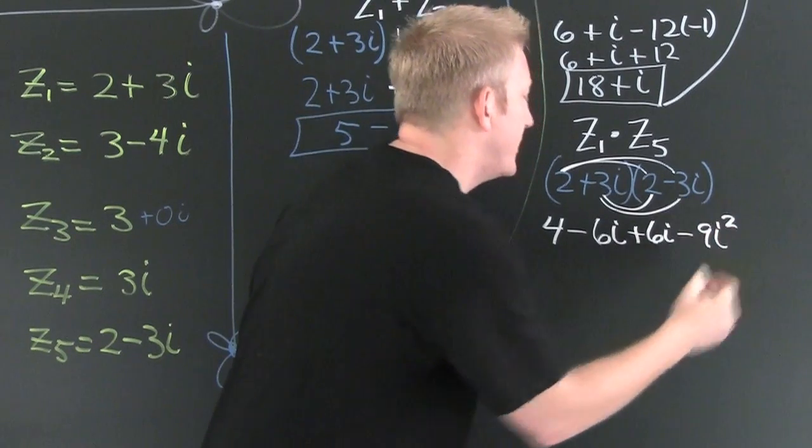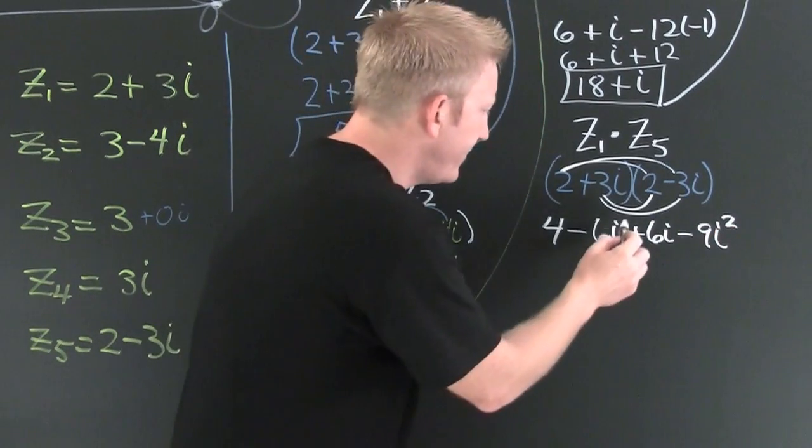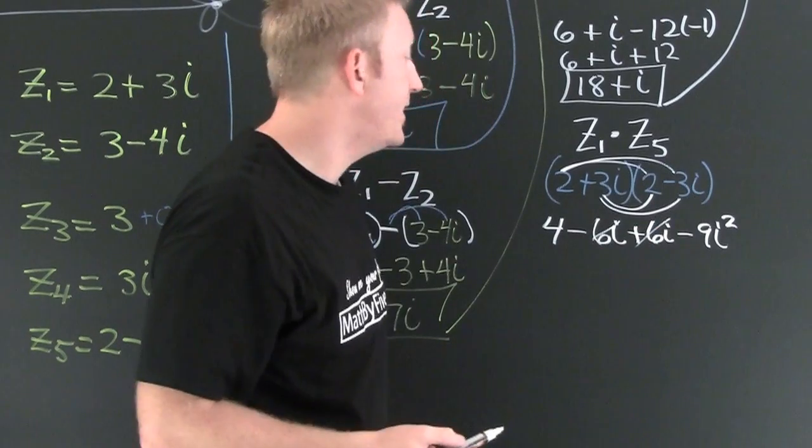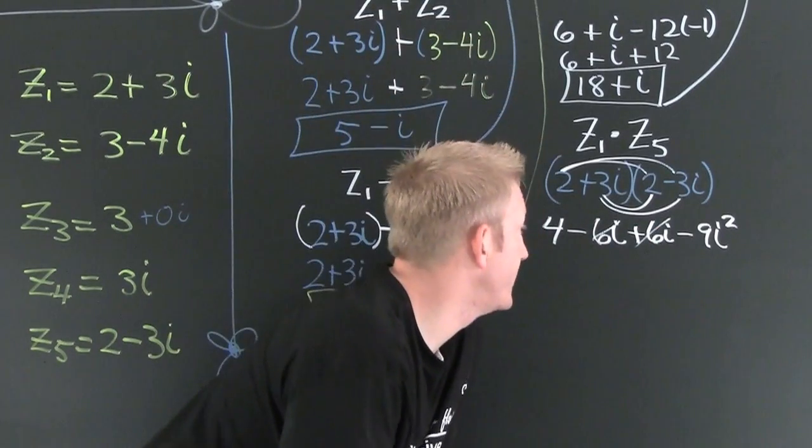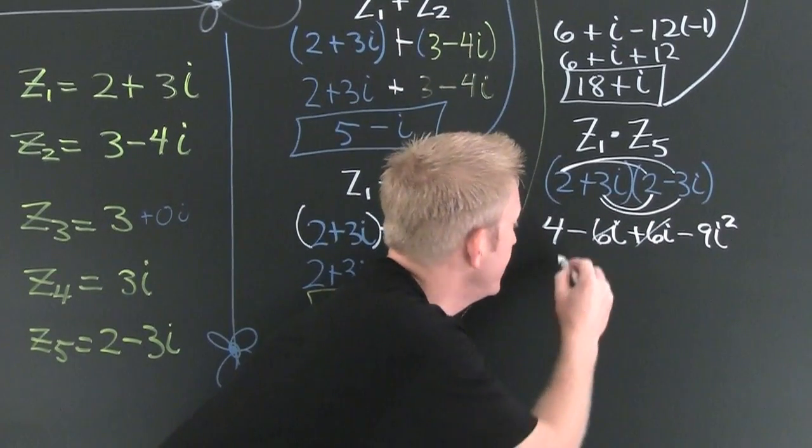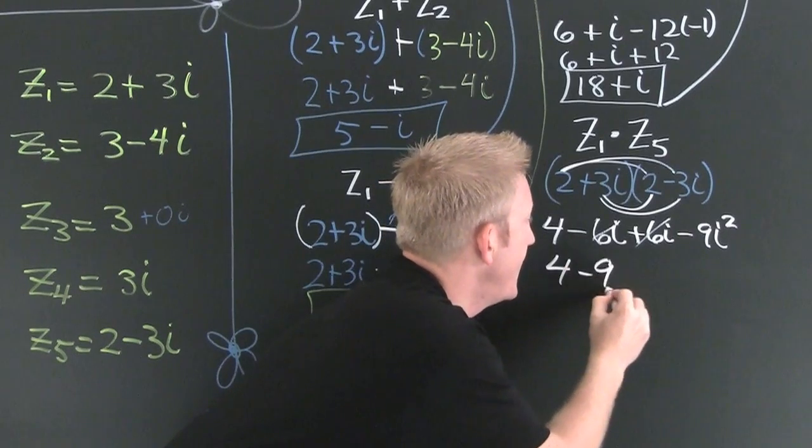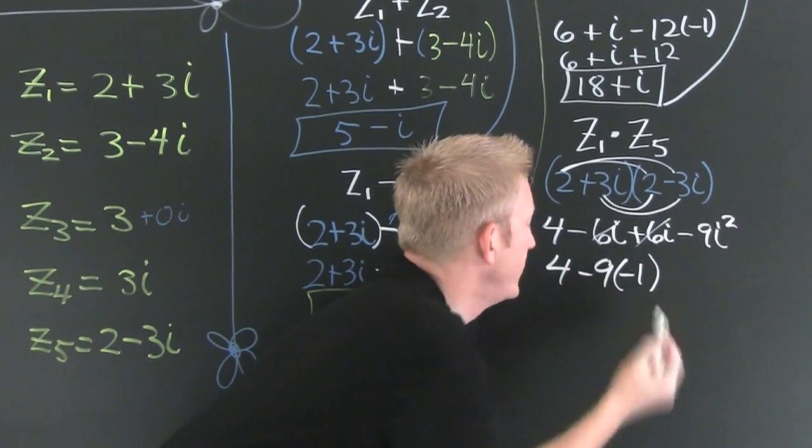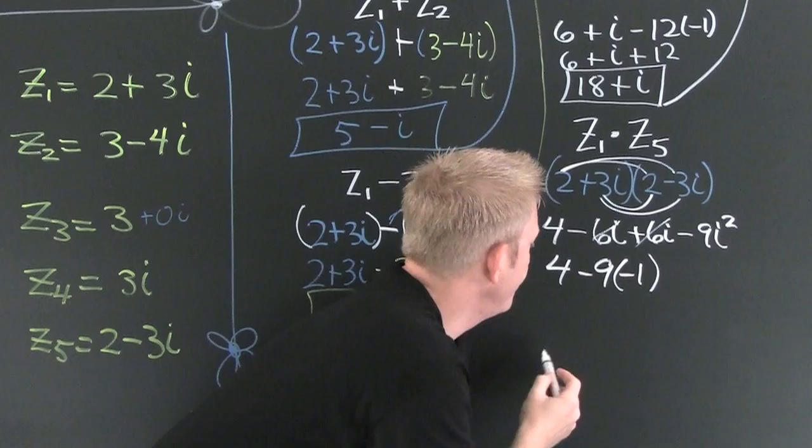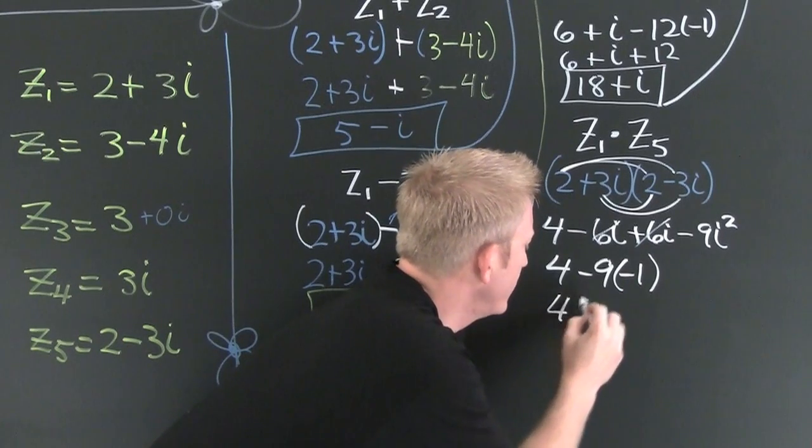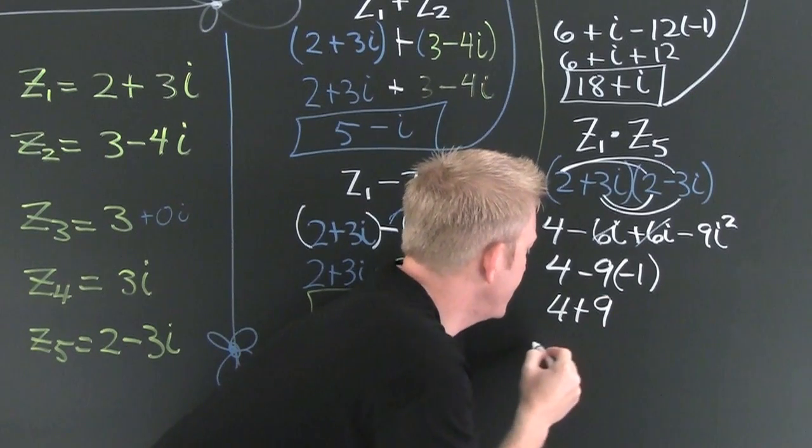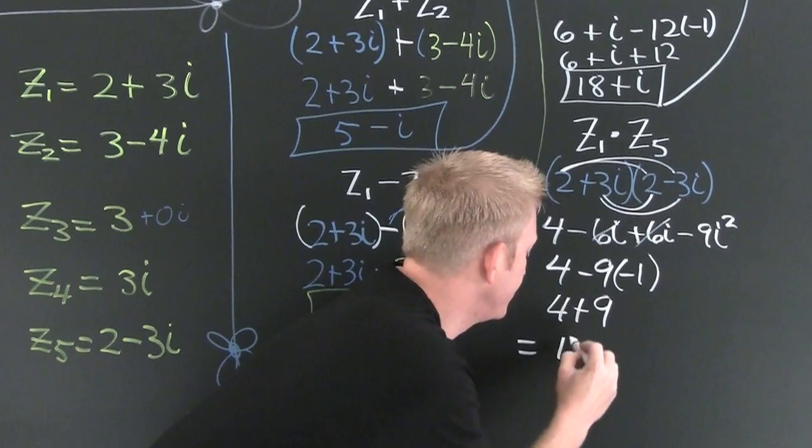They're still additive inverses even though they're imaginary. So then you have 4 minus 9 times minus 1. So this is 4 plus 9, which gets you 13.